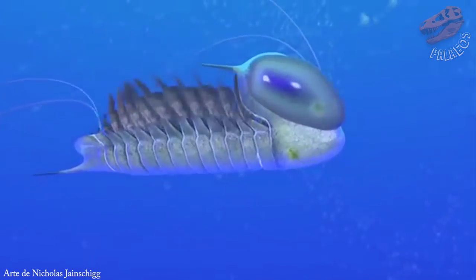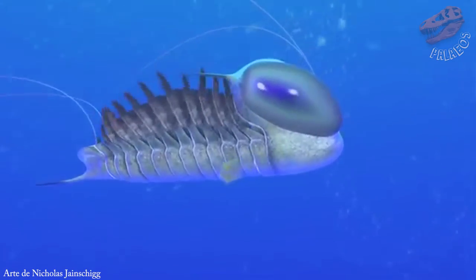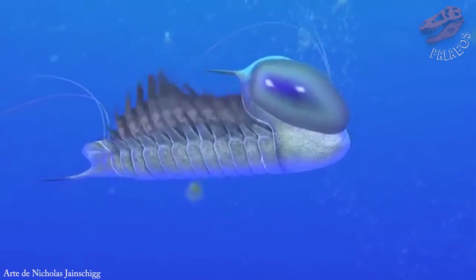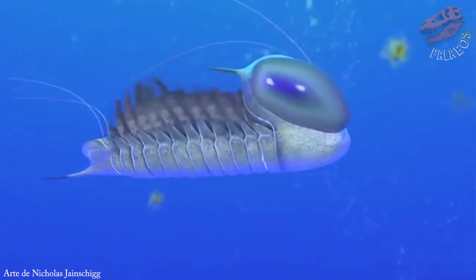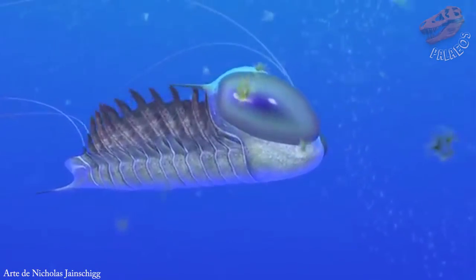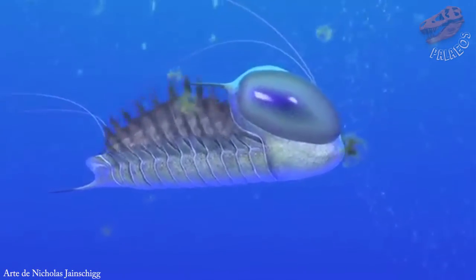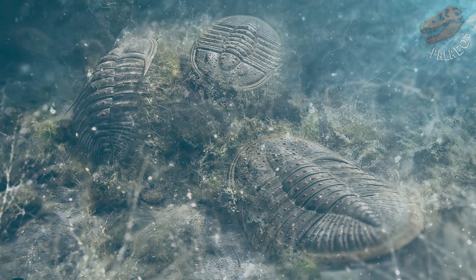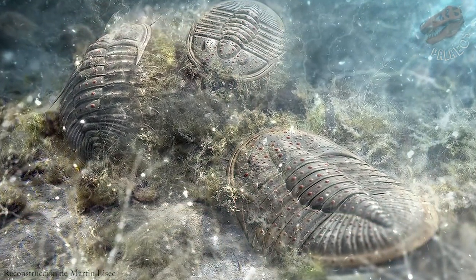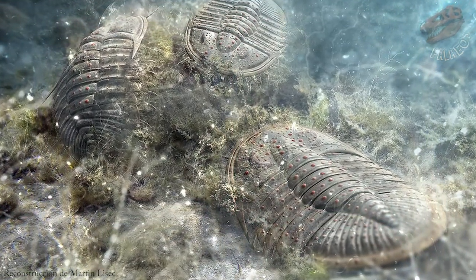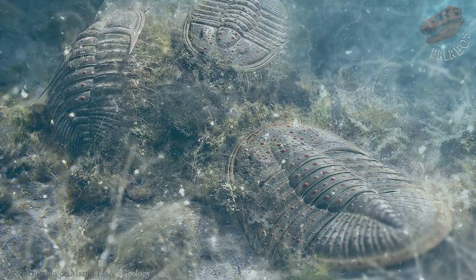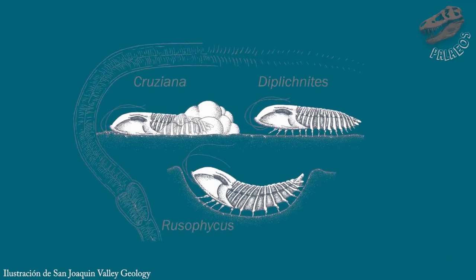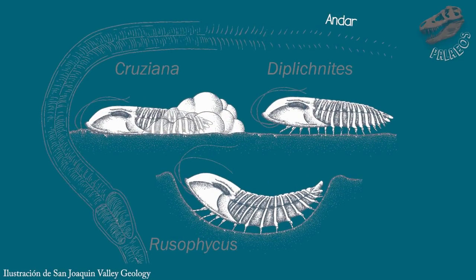Finalmente, tenemos a los trilobites más raros, aquellos de hábitos nadadores activos que vivían de cabeza y se alimentaban de zooplancton. Los trilobites vivieron por tanto tiempo que no solo cuentan con fósiles corporales, sino que existen icnofósiles que nos dicen cómo caminaban, se enterraban e incluso cómo se escondían en el sedimento.